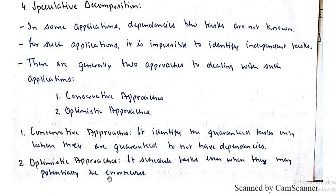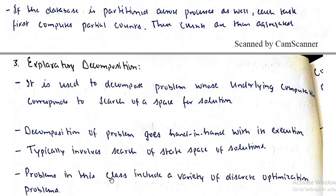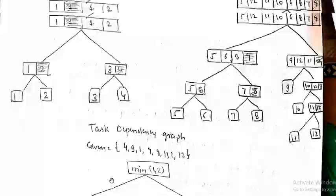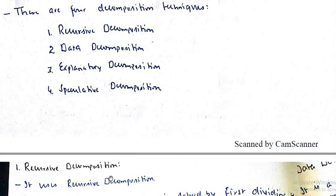These were all four approaches, four kinds of decomposition: recursive decomposition, data decomposition, exploratory decomposition, and speculative decomposition. These were all decomposition techniques. Thank you very much.